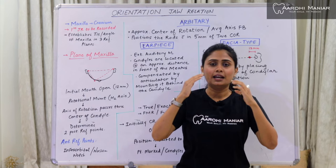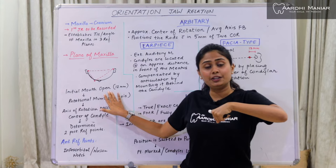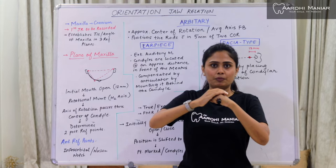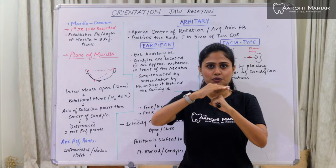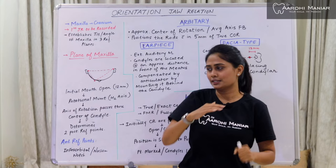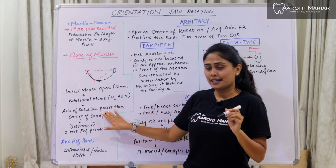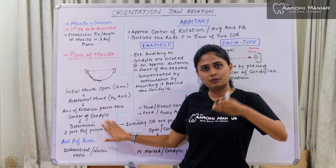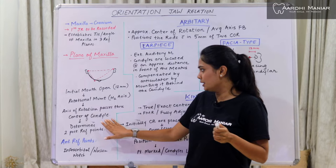During initial mouth opening and accordingly during final mouth closing — just 12 mm of distance — there is a rotational movement of our condyle in the glenoid fossa. The rotational movement occurs over a horizontal axis. The axis of rotation passes through the center of the condyle. When anything rotates, the axis passes through the center of the object — like our earth rotates around an imaginary axis that passes through its center. Similarly, this horizontal axis passes through the center of the condyle and determines our two posterior reference points.